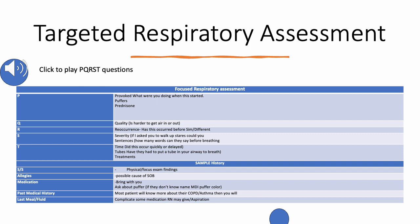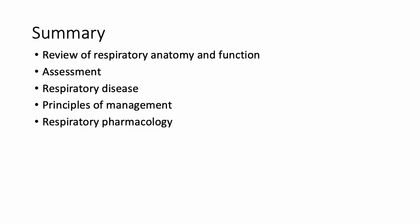Severity: If I asked you to walk up a flight of stairs right now, could you do it? This helps gauge how severe the shortness of breath is. Observe how many words the patient can say in a row before taking a breath. Time: Did this occur quickly or gradually? Acute shortness of breath typically has a specific cause, while gradual onset is usually an exacerbation of a concurrent condition. Have you ever had a tube placed in your airway to help you breathe? What treatment did they provide last time? This may help identify a previous medical problem the patient cannot fully explain.